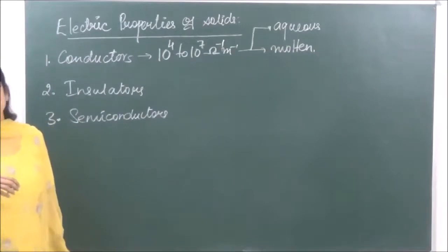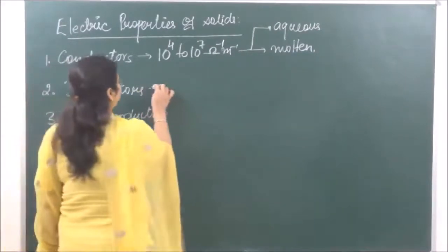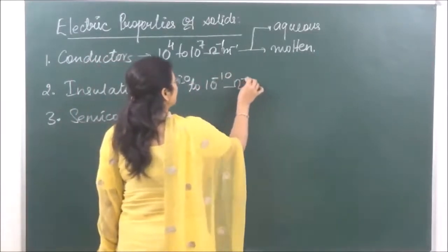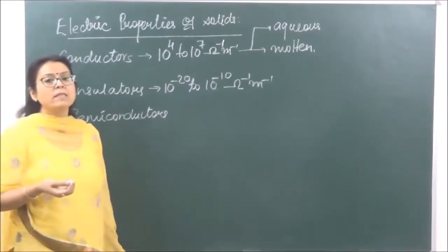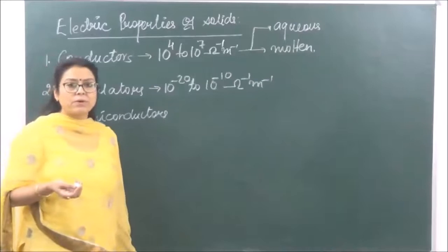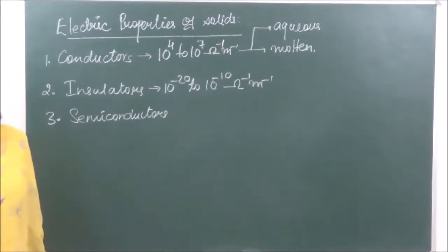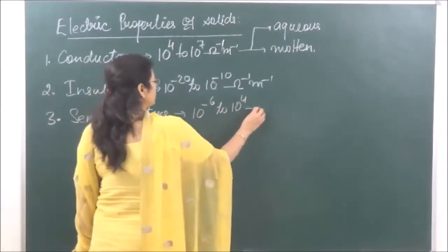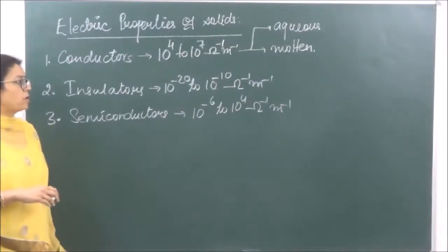Insulators do not conduct electricity at all, because their conductivity is very, very low — of the order of 10⁻²⁰ to 10⁻¹⁰ per ohm per meter. Examples include wood, plastics, and rubber. Semiconductors come in between conductors and insulators. They have conductivity of the order of 10⁻⁶ to 10⁴ per ohm per meter.